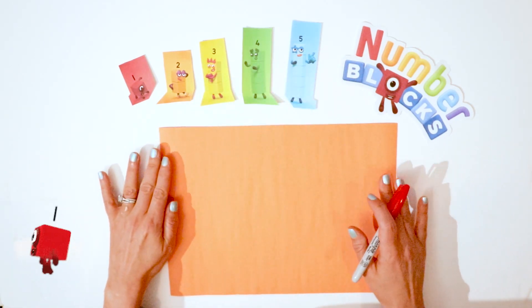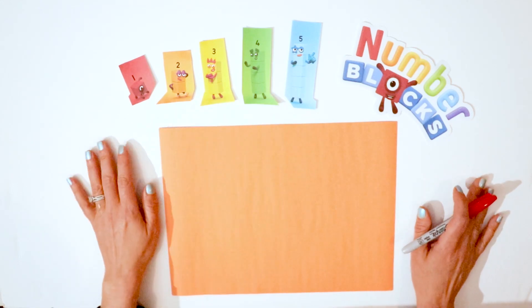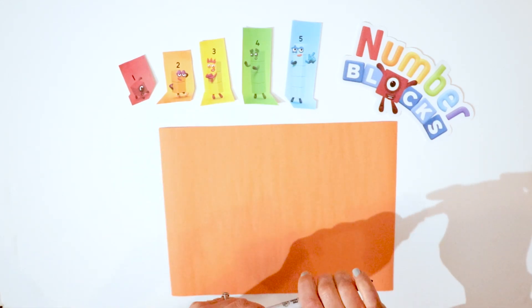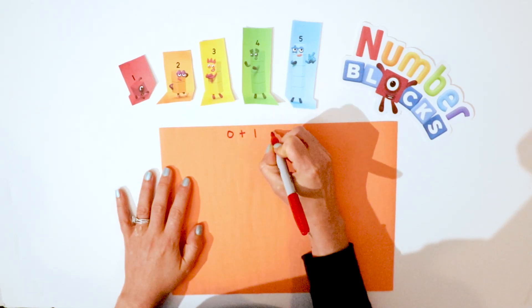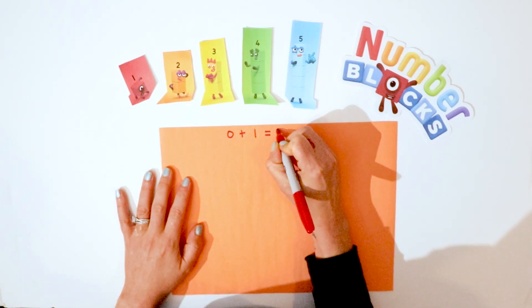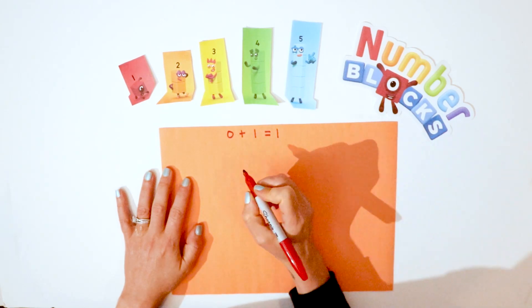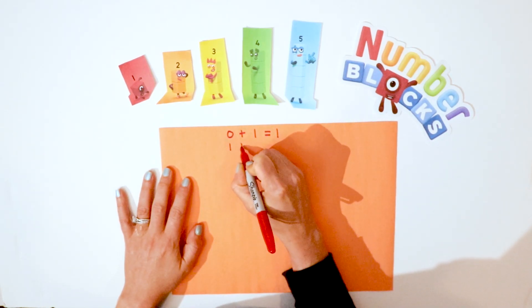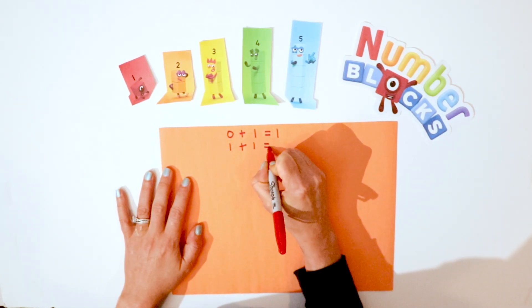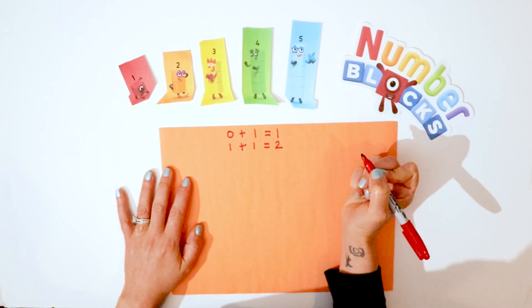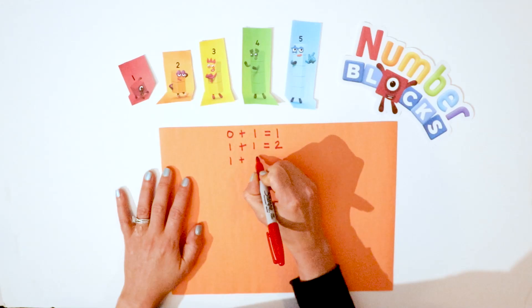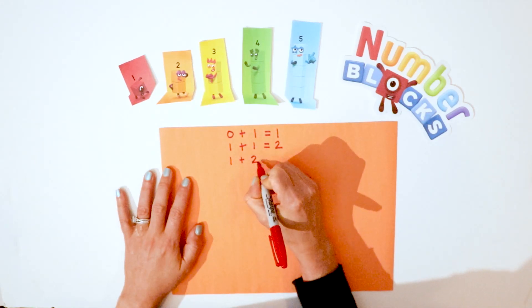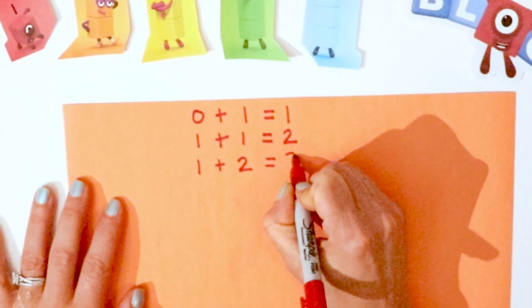Let's do some adding with our numbers one through five. Zero plus one equals one. One plus one equals two. One plus two equals three.